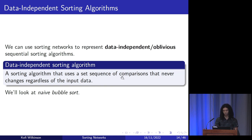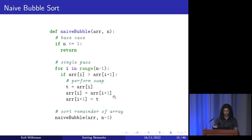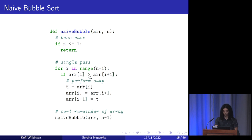Sorting networks represent what's called data-independent or data-oblivious sorting algorithms — algorithms that use a fixed sequence of comparisons that never change regardless of the input data. As an example, we'll look at naive bubble sort. Normally bubble sort is implemented with an optimization where you track whether any swaps were made during a pass and terminate early if not. This naive version lacks that optimization. It's a recursive implementation: if n ≤ 1, return; otherwise do a single pass comparing pairwise adjacent elements and swapping if out of order, then make a recursive call with n one lower.